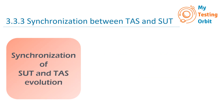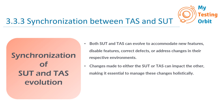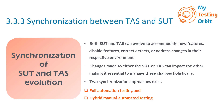The last topic is synchronization of SUT and TAS evolution. Both SUT and TAS can evolve to accommodate new features, disable features, correct defects, or address changes in their respective environments. Changes made to either the SUT or TAS can impact the other, making it essential to manage these changes holistically. There are two synchronization approaches to ensure everything works seamlessly: the first involves full automation testing and the second is a hybrid manual-automated testing approach.